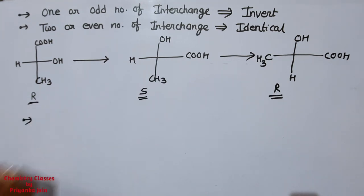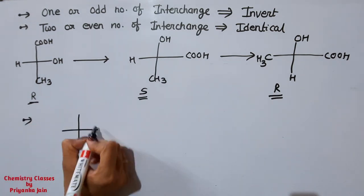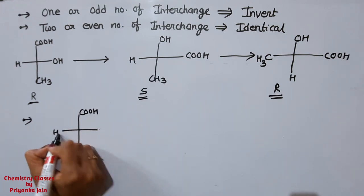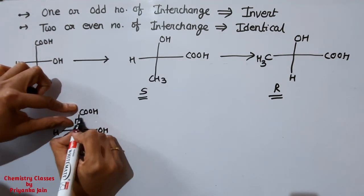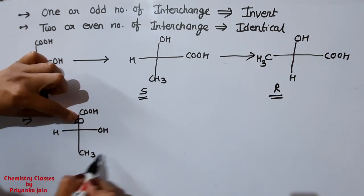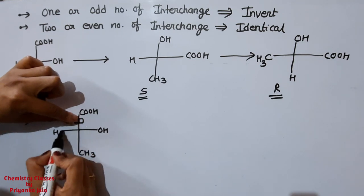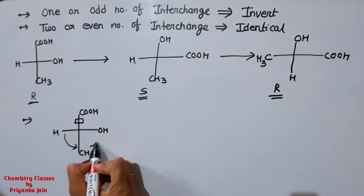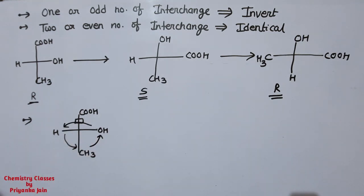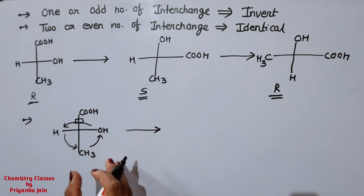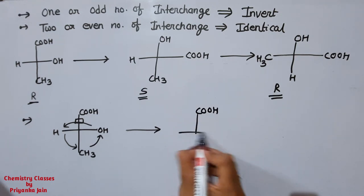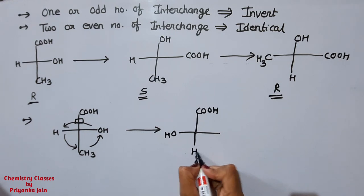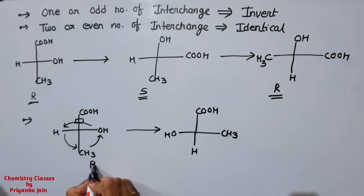Also in Fischer projections, if we fix one bond and rotate the other three groups around it, the configuration of the molecule remains the same — the molecule stays identical. For example, fixing one bond and rotating the remaining three groups — OH comes here, H goes there, CH3 stays — we still get R lactic acid. The molecule is the same.